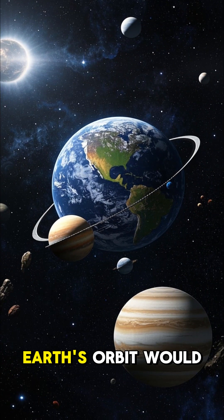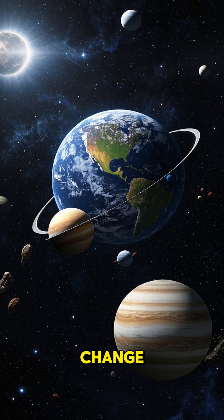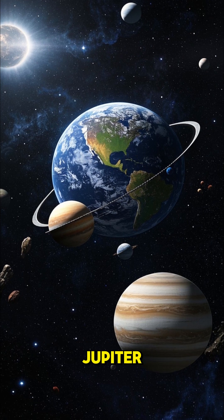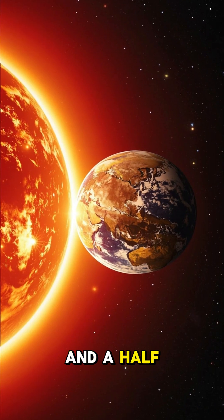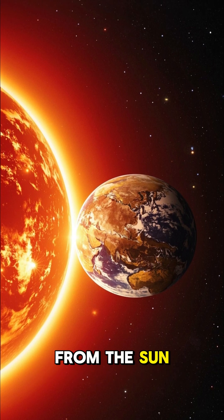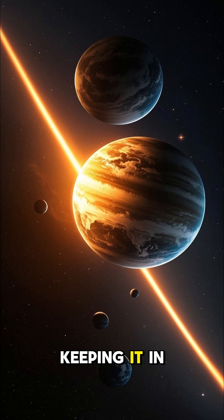Number two, Earth's orbit would change. Because of the gravitational pull of Jupiter, our planet's orbit is actually shifted about three and a half light minutes away from the Sun. Without Jupiter's gravity keeping it in check, Earth would fly right out of orbit and into the Sun.